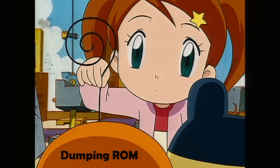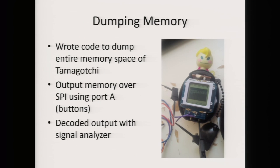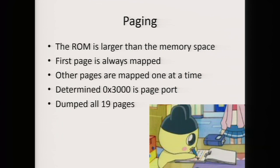The next thing I wanted to do was dump the Tamagotchi's ROM. What I did was break out the button lines, which are port A, then write out the entire memory space using SPI, and use my signal analyzer to analyze it. Unfortunately, this wasn't the entire ROM — the ROM is actually much larger than the memory space, and it uses ROM paging to make its memory space larger. The first page of ROM is always mapped in the upper half of addresses, and then the lower half can be different parts of the ROM depending on a register. Looking at the first page, I was able to figure out what this register was: it was 0x3000, and then I was able to dump all 19 pages of ROM.